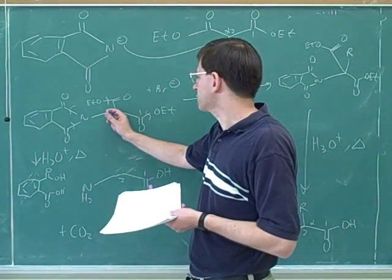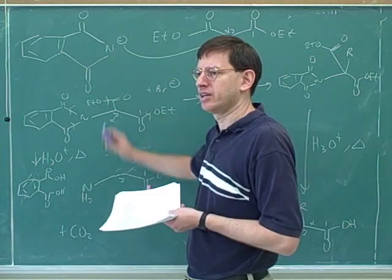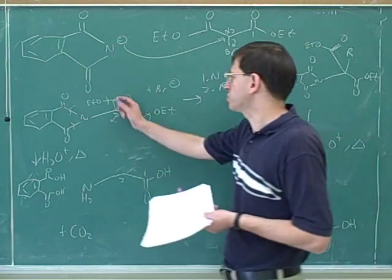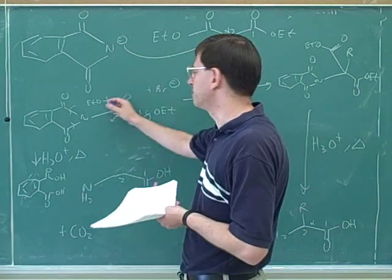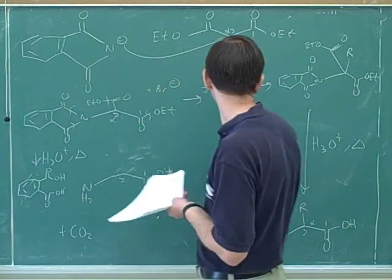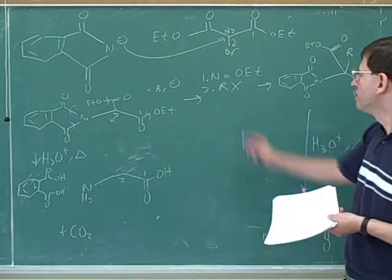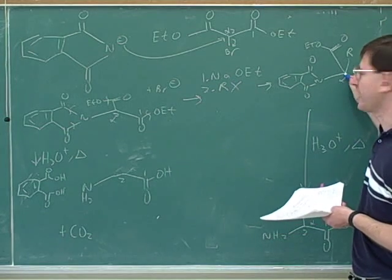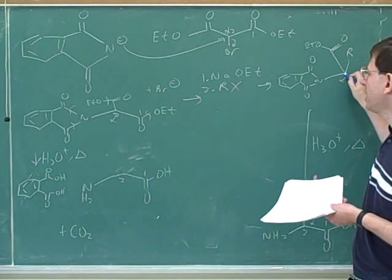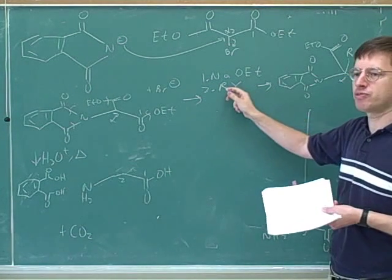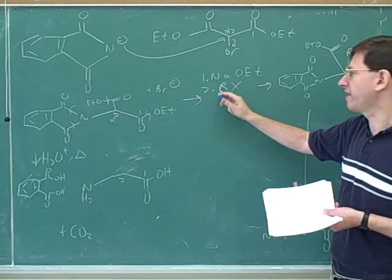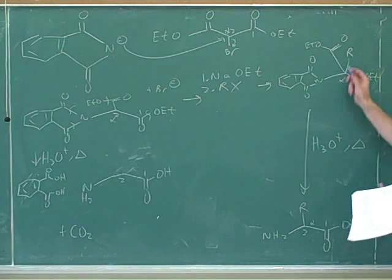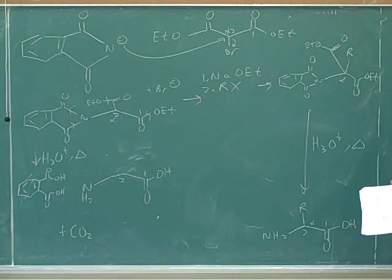Why is it so easy to deprotonate this carbon? Because of resonance — it's between the two carbonyl groups, so it's doubly stabilized by resonance. This base is going to put a negative charge on this alpha carbon. And then what type of reaction happens in step two? An SN2 reaction, where the negative alpha carbon attacks the RX to put our side chain on.